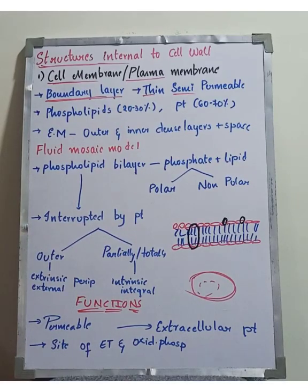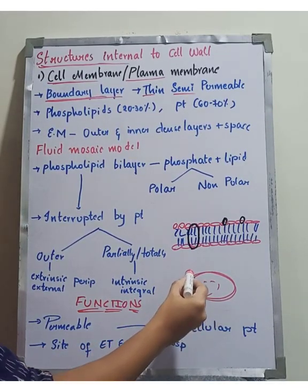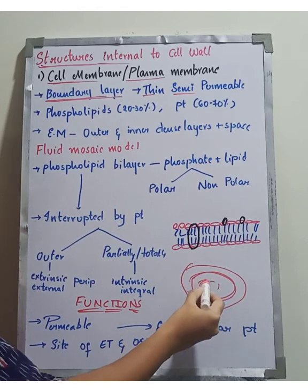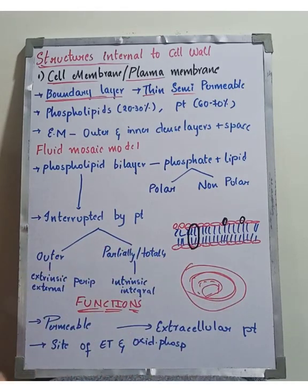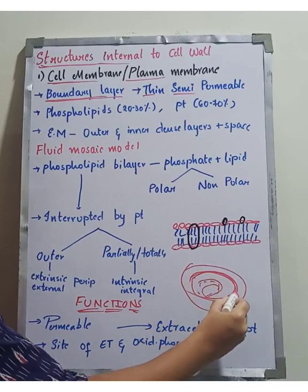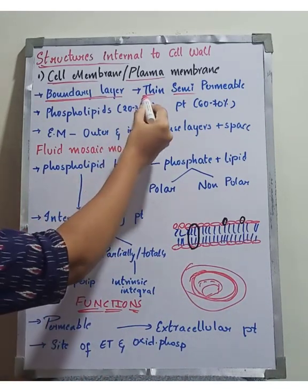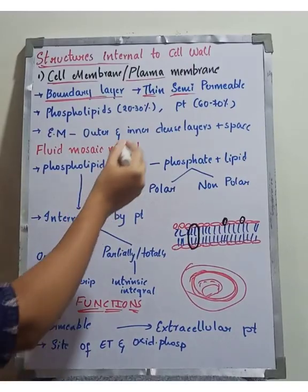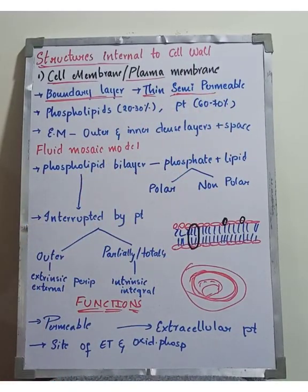The plasma membrane is a boundary layer. It is thin and semi-permeable. Being semi-permeable means only certain types of molecules are allowed through.